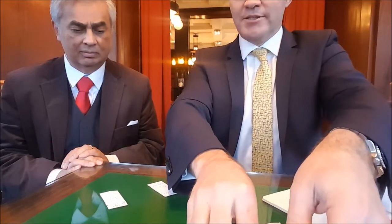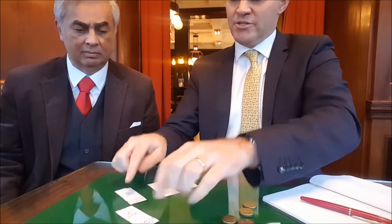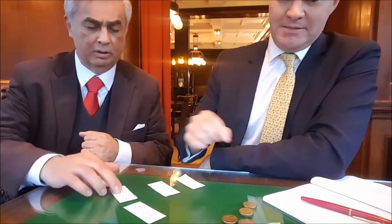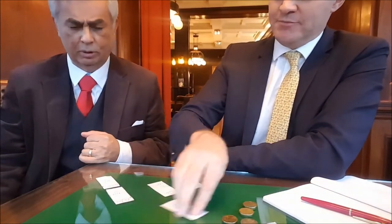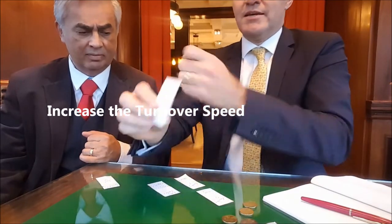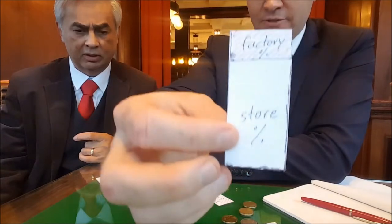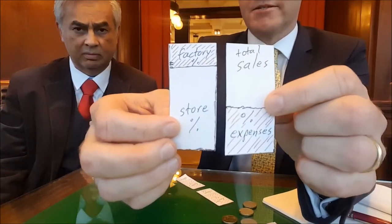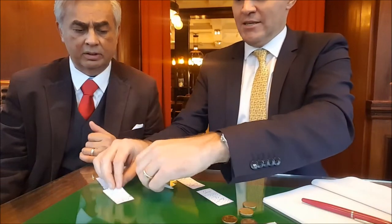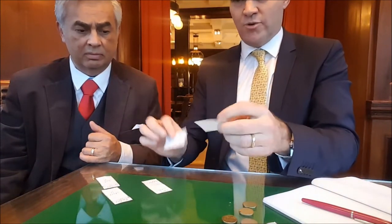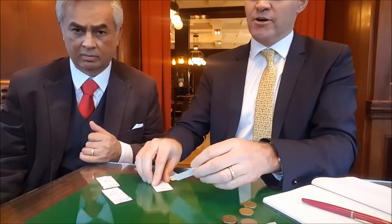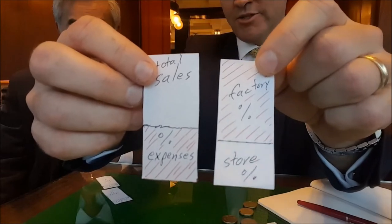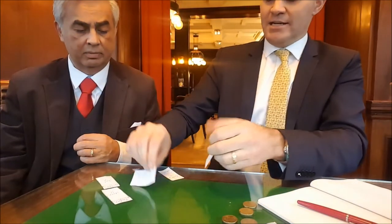If we have one article that sells three times — it sells, it sells, it sells — we're going to increase the turnover speed. This article gets sold once, twice, three times. This is the percentage that goes to the store, and this from the first year was the percentage of expenses. So this looks like a profitable idea. The alternative is to have an article that sells twice with a lower turnover speed and a lower margin — so the expenses to the factory plus the expenses percentage from the store is more than 100%. That looks like a disaster.